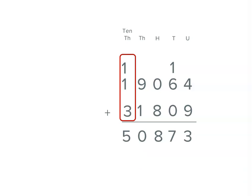Then in the tens of thousands place, 1 plus 1 is 2, and 3 is 5. So the answer to our problem is 50,873.